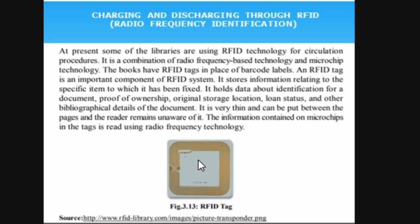RFID tags are very thin and can be put between pages — readers remain unaware of them. This is an advantage over barcodes, which must be stuck on the outside where students can tear them. Once a barcode sticker is torn, the scanner cannot read it. RFID tags can be pasted anywhere inside the book and are not easily removed. The RFID components include: RFID tags, a reader or scanner to read the data stored in the tags, and a computer to display the output.